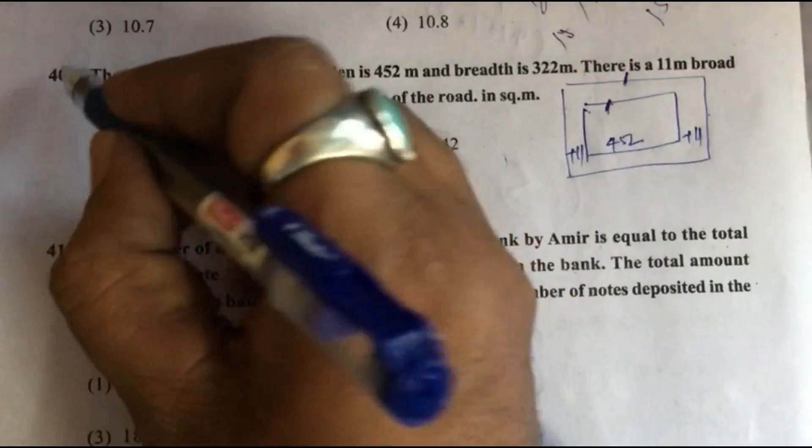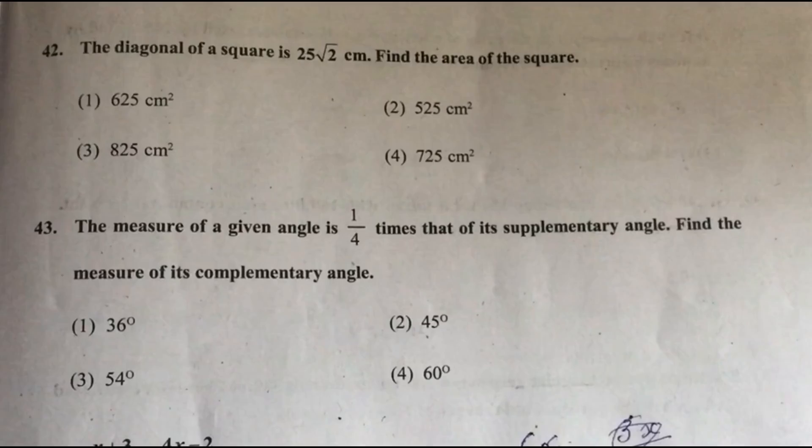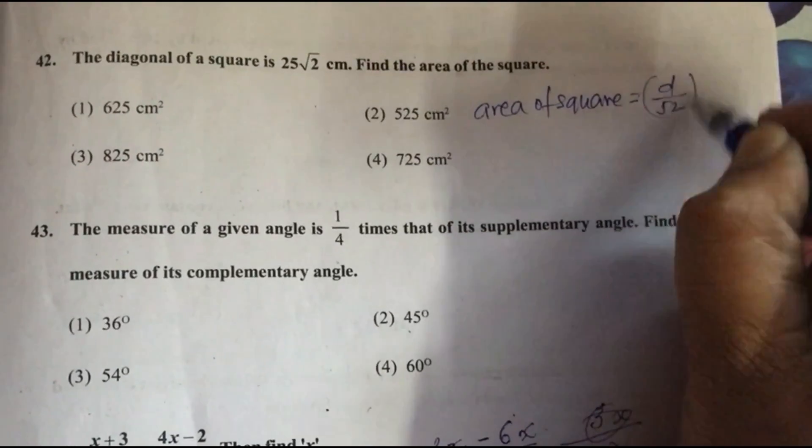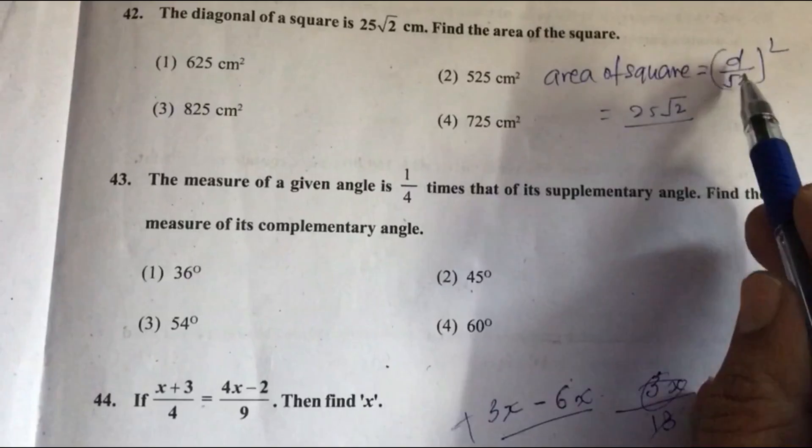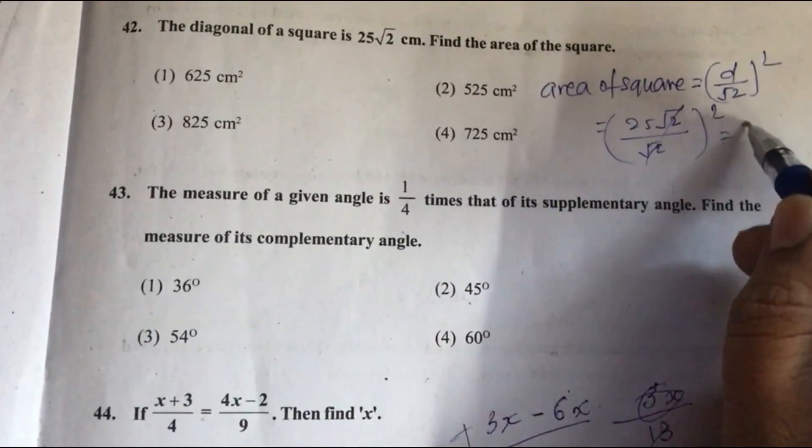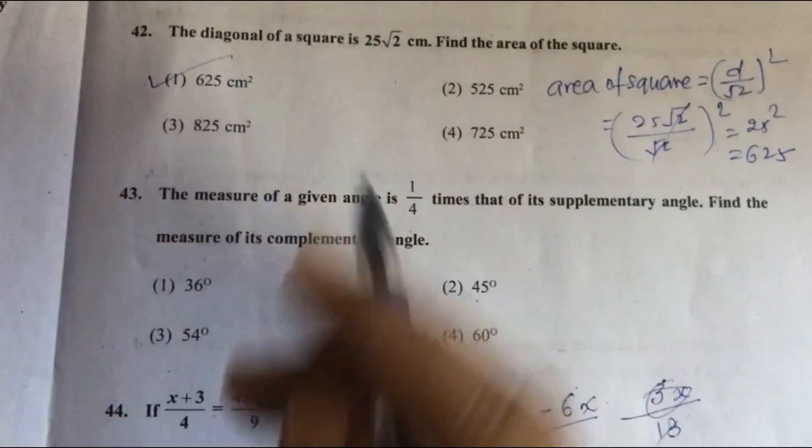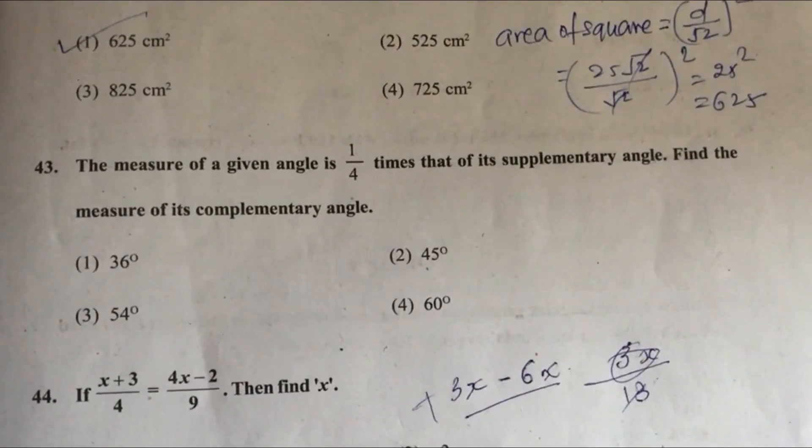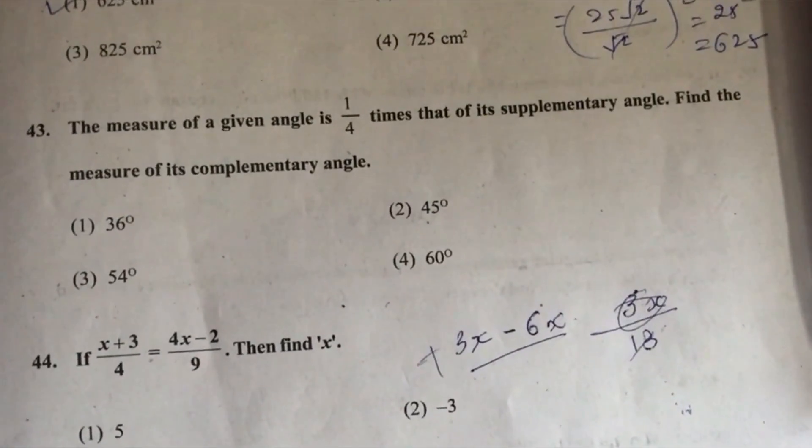Question 41: The diagonal of a square is 25 root 2. Find the area of the square. Side is d upon root 2 square, that is 25 root 2 upon root 2 whole square. 25 square is 625, answer is option 1. Question 42: The measure of a given angle is 1 upon 4 times that of its supplementary angle. Find the measure of its complementary angle. When we solve, we will get supplementary angle 36 degrees, but we have to find complementary of this, so 90 minus 36 equals 54, the answer.